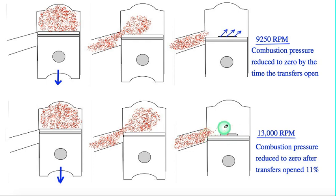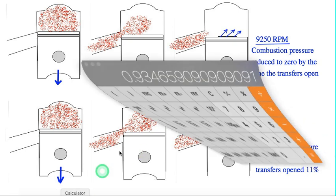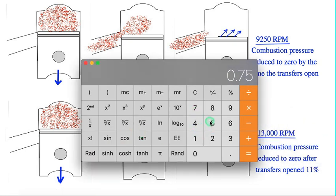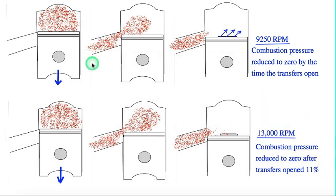And you have to go all the way down to 9,250 RPM for that pressure to be zero when the transfer is open. So that's a pretty good range there. Typically, the top 25% of the RPM is in the power band of the pipe, so 0.75 times 13,000 is 9,750.